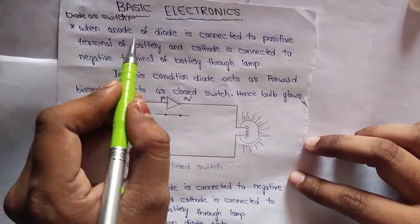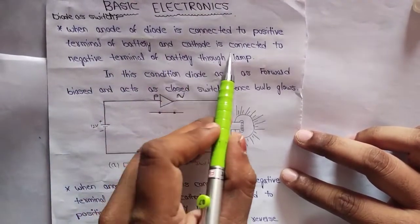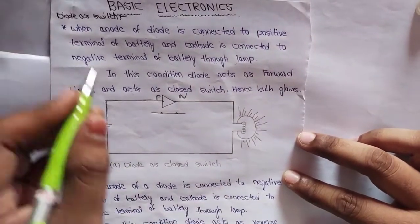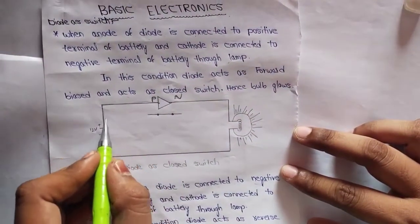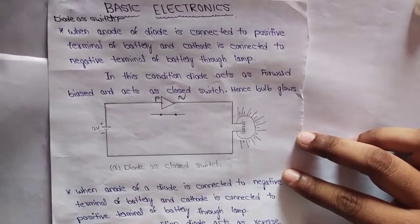When the anode of a diode is connected to positive terminal of a battery and cathode is connected to negative terminal of a battery through lamp, the anode is connected to positive terminal and cathode is connected to negative terminal.